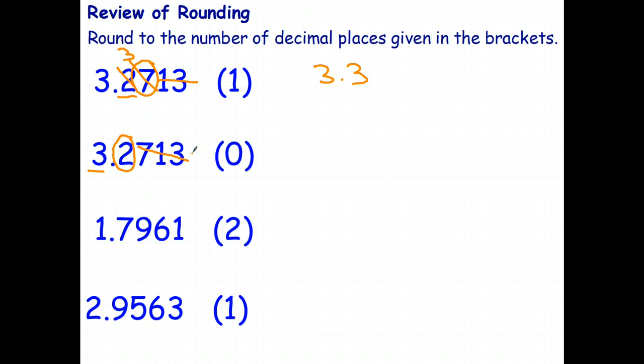Doesn't matter what they are. Because that is less than 5, that stays as a 3. So zero decimal places just means to the nearest whole number. Stop the video and see if you can correctly round the next two numbers to the number of decimal places given in the brackets.